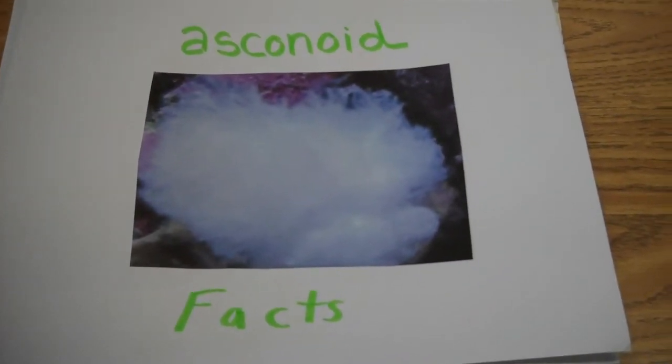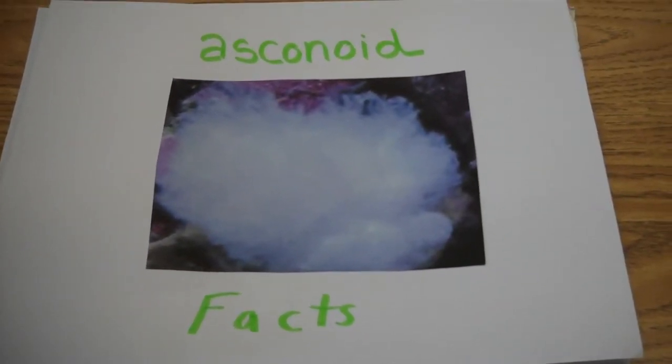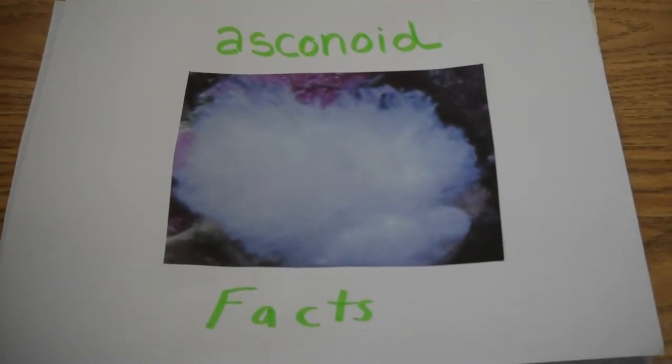An additional fact about an asconoid sponge is that an asconoid sponge cannot filter the same amount of water that a syconoid sponge can of the same size.